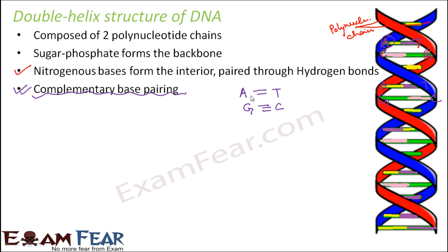One double bond binds adenine to thymine, whereas one triple bond binds guanine to cytosine. Thymine and cytosine are pyrimidines, and A and G are purines. Basically one purine will pair up with one pyrimidine — but not any purine with any pyrimidine: A can only pair up with T, G will pair up with C, and C will pair up with G. This is known as complementary base pairing.